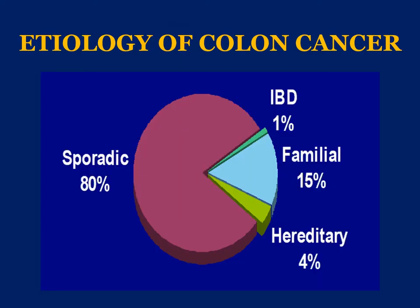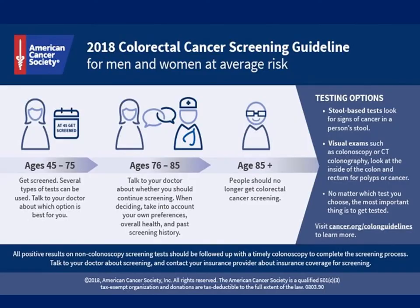Regarding etiology, the majority of colorectal cancer is sporadic. Traditionally, approximately 1% is related to IBD, 15% seen in families, and approximately 4% hereditary. A recent study from the Mayo Clinic showed that approximately 15% of colorectal cancer is inherited through modern genetic techniques. Because of this burden, the American Cancer Society changed screening recommendations — we now screen patients between age 45 to 75, with patients between 76 and 85 continuing screening based on past polyp or cancer history and overall health, and generally no screening advised beyond age 85.